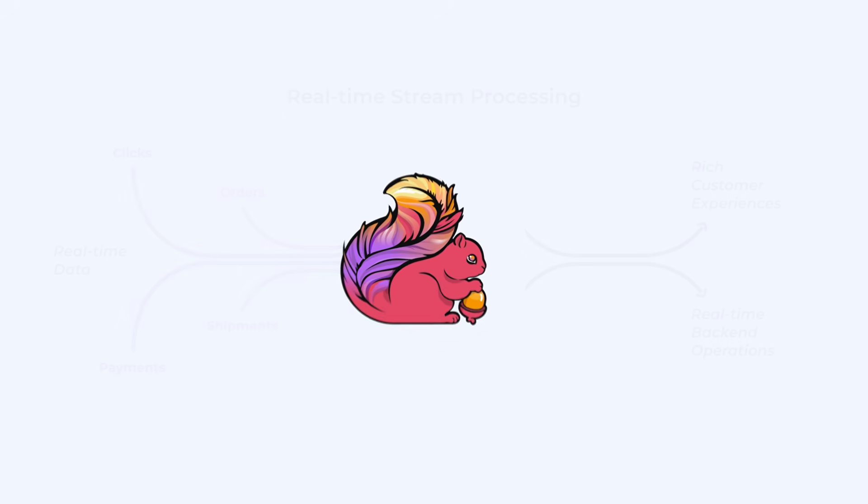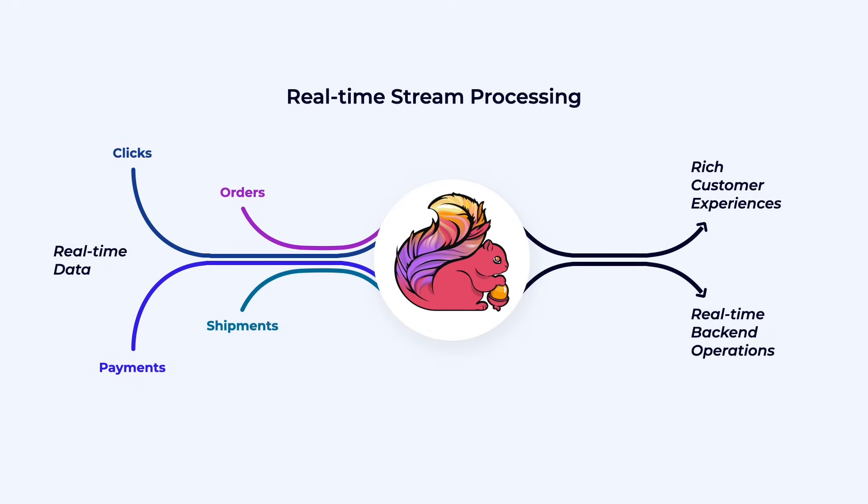Apache Flink is a framework for doing stream processing, which means it's software that helps you harness the power of a cluster of computers to process data in real time as that data is being produced. For example, this data might be events describing the orders and payments for goods related to your business, and you may want to process this data in real time in order to provide your customers with better experiences. I believe that Flink SQL is the best way to get started with Flink, and even though Flink SQL is just an API for building Flink applications, it has a lot in common with SQL databases.